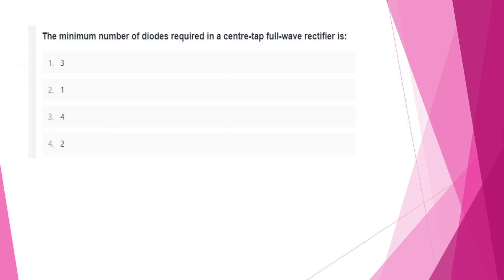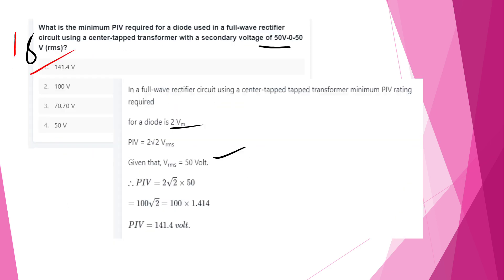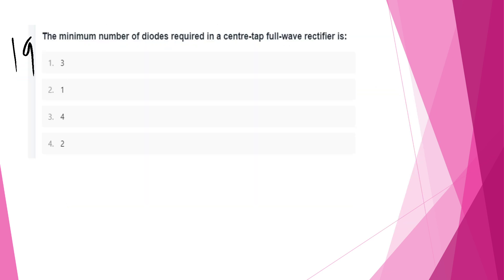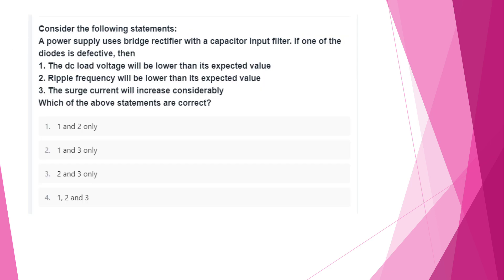The minimum number of diodes required in a center-tap full-wave rectifier is 2.